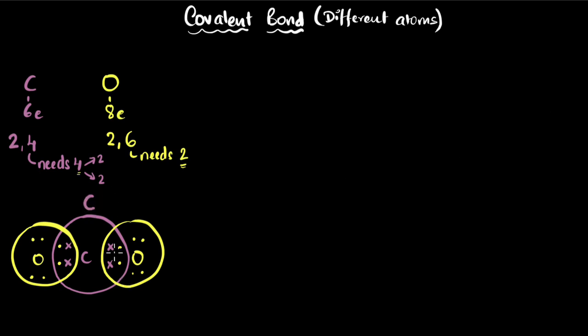So carbon forms a double bond with one oxygen and another double bond with another oxygen. You see, two pairs are being shared. And so that's how carbon dioxide exists in nature.